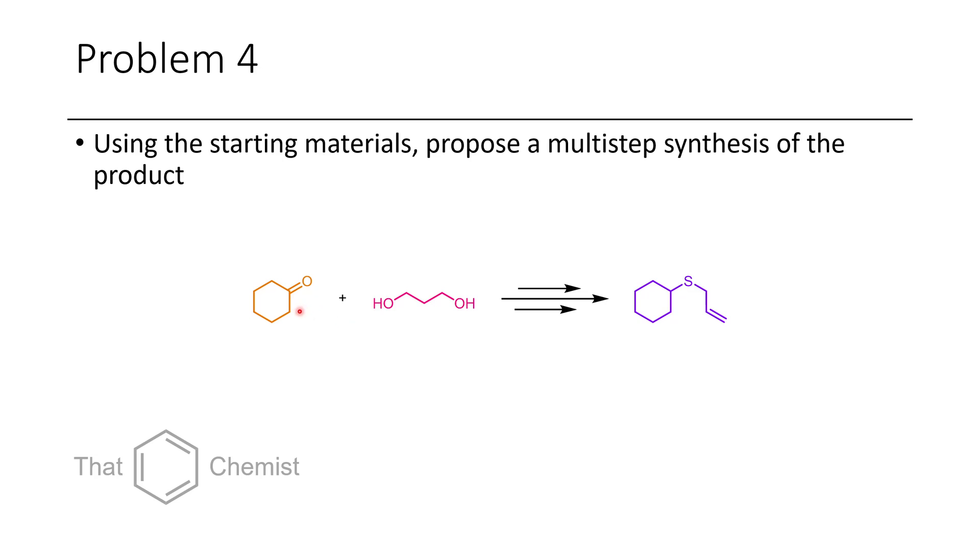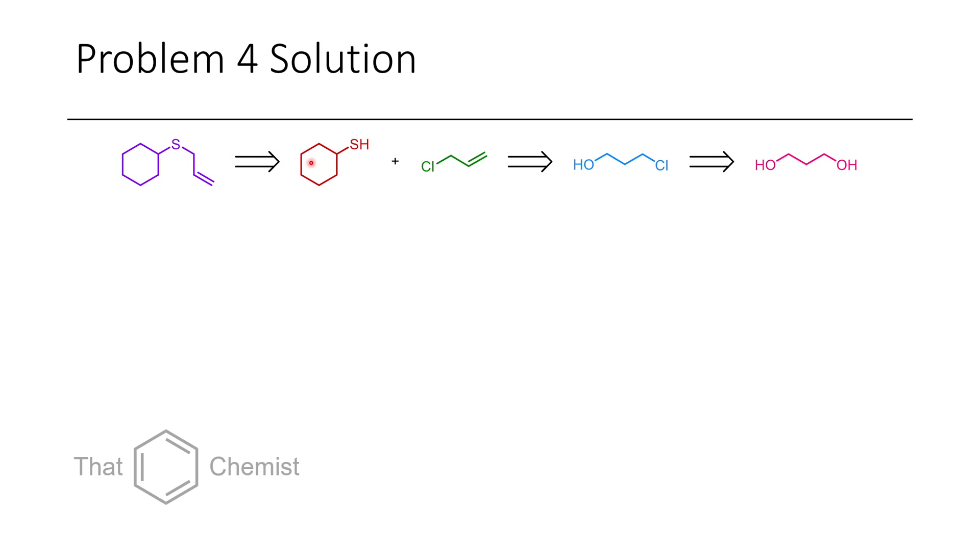Okay problem four. We have this ketone cyclohexanone and we have 1,3-propanediol and somehow we have to get this complex thioether. While this might seem challenging at first, this is actually quite doable. First you'd be able to break this to cyclohexanethiol as well as allyl chloride. It would then be possible to start with something like 1,3-dichloropropane. This 1,3-dichloropropane could be derived from 1,3-propanediol. We could derive cyclohexanethiol from cyclohexyl bromide which could be made from cyclohexanol which could be made from cyclohexanone.